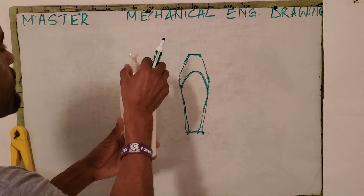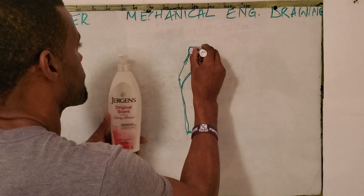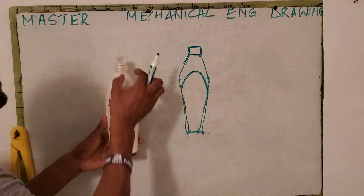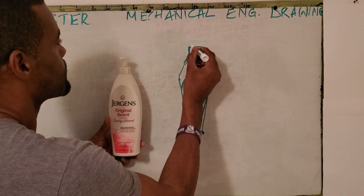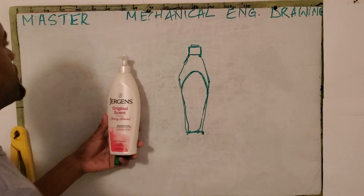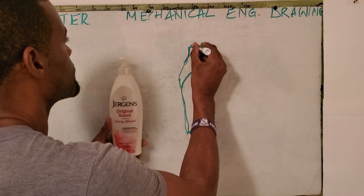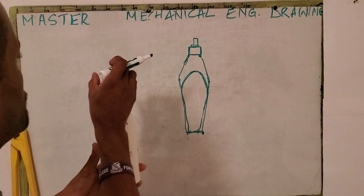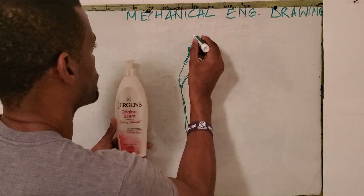Then we have this piece right here — the cap right here. And from that we have this little piece up here, and the stem here.